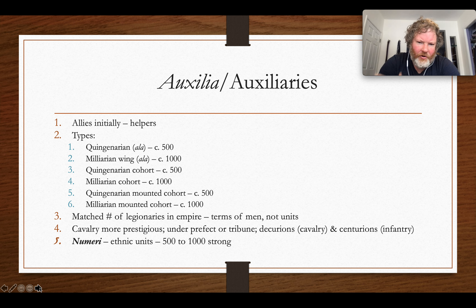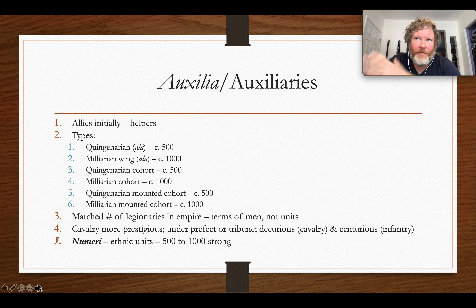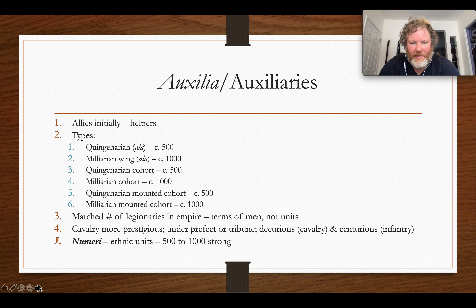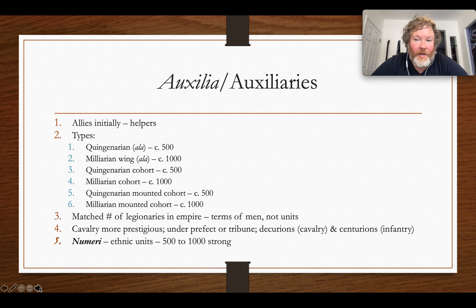There was also another group related to this called the numeri, or ethnic units. They're a bit fuzzy — possibly 500 to 2,000 strong — but maybe more non-Roman in character, whatever that means. Too complicated to get into here, and possibly a later addition than the auxiliaries.